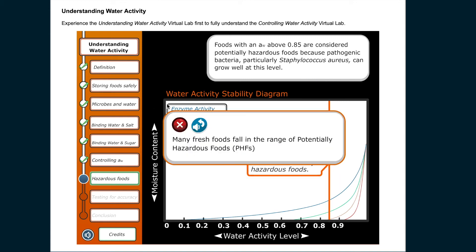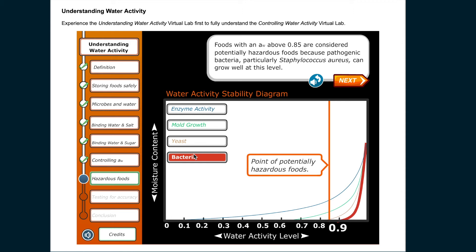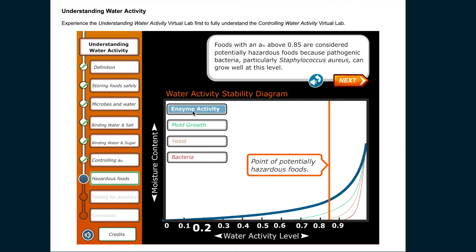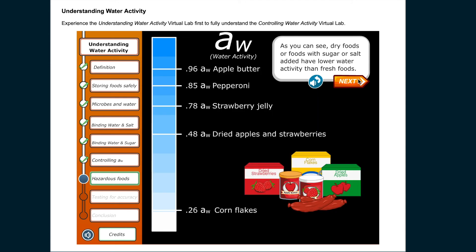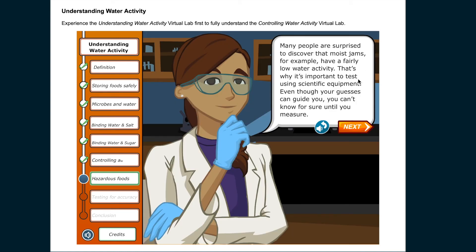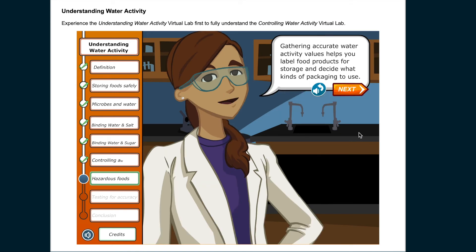Many fresh foods fall in the range of potentially hazardous foods (PHFs). Dry foods, or foods with sugar or salt added, have lower water activity than fresh foods. Many people are surprised to discover that moist jams have a fairly low water activity — that's why it's important to test using scientific equipment. Even though your guesses can guide you, you can't know for sure until you measure. Accurate water activity values help label food products for storage and guide packaging decisions.